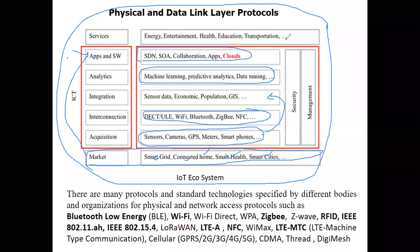So today we are going to study the physical layer. There are many protocols and standard technologies specified by different bodies and organizations for physical and network access protocols. Amongst them: Bluetooth Low Energy, Wi-Fi, Wi-Fi Direct, WPS, ZigBee, Z-Wave, RFID, and IEEE 802.15.4, which is a wireless sensor network protocol.